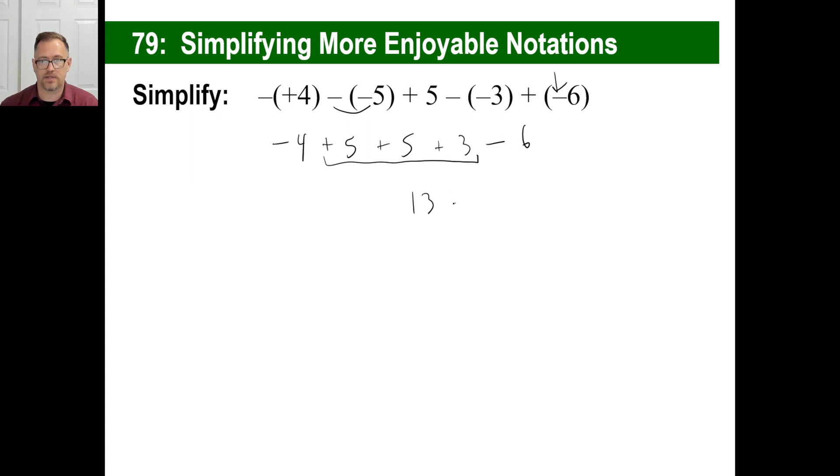I can clump all the positives together again. Look at this. 13 there. And then -4 and -6. Wait a minute. That looks strangely familiar. 13 minus 10. Maybe I did that twice. Okay. All right. I did that twice. Anyway.